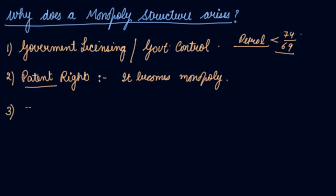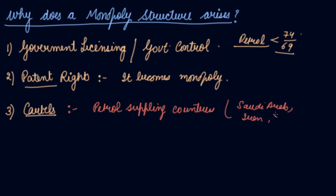The third reason is cartels. What are cartels? Cartels are groups of firms that come together to avoid competition. They make an agreement together. For example, the petrol-supplying countries - the Gulf countries like Saudi Arabia, Iran - where you get crude oil from. They have formed cartels and come into an agreement that they will not be selling their petrol below a certain price.